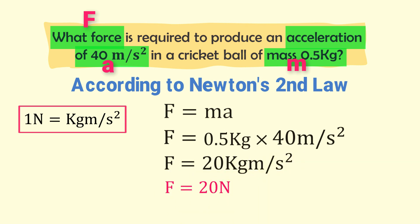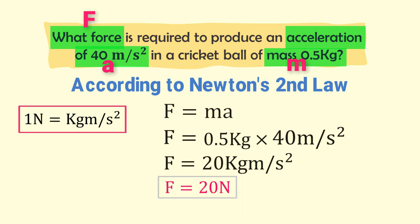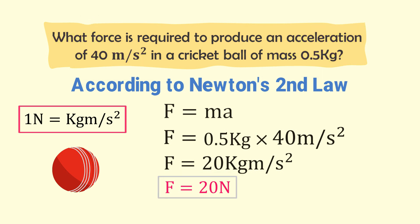This means if we exert a force of 20 newtons on a cricket ball of mass 0.5 kg, this 20-newton force will produce an acceleration of 40 meters per second squared.